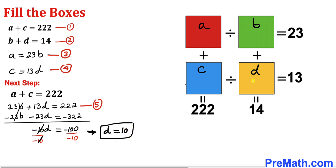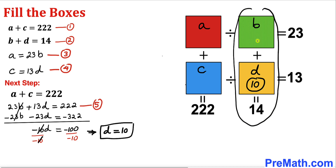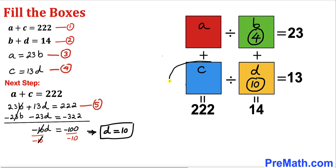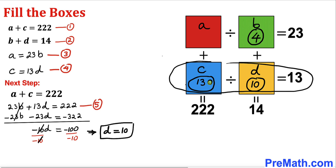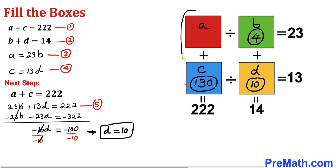So we figured out our D value for this box is 10. Now focusing on the two vertical boxes, if D is 10, then the B box has got to be 4 so that we get 14. Now focusing on the two horizontal boxes, C has got to be 130, because 130 divided by 10 is indeed 13.